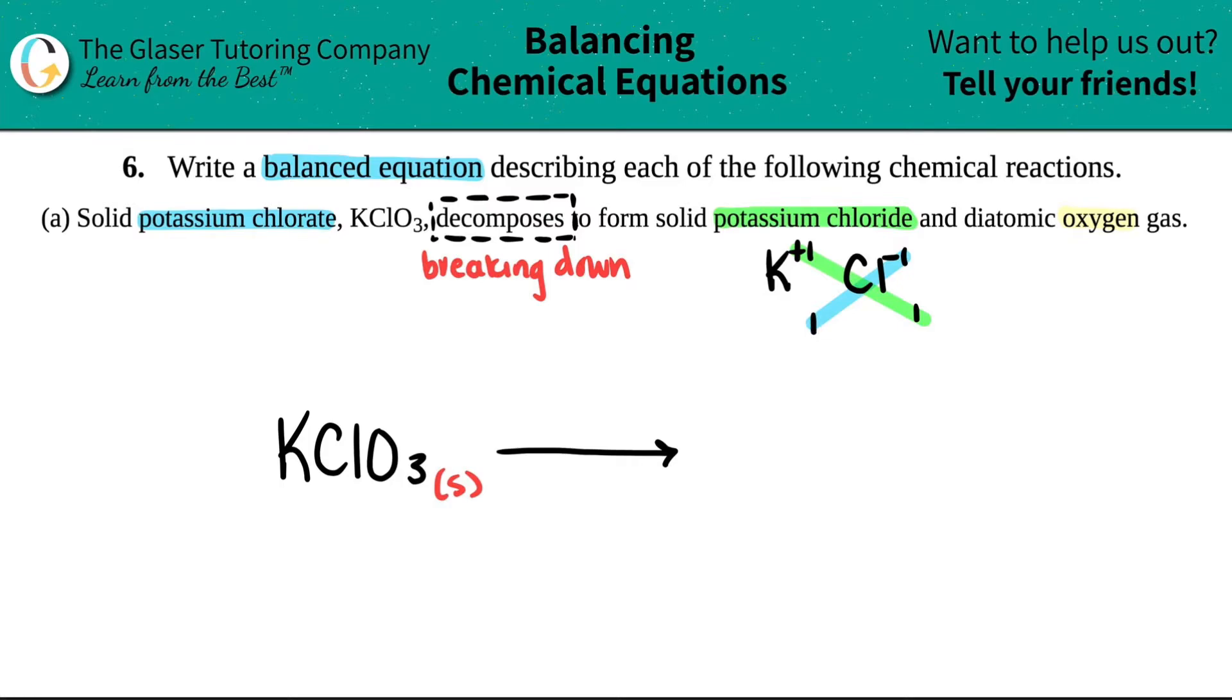This one crisscrosses down telling you that I have one chlorine, and the same thing goes for this one - one potassium. But it's one-to-one, so I can't break that down any further. My compound would just be KCl, potassium chloride. They told me it's a solid, so I'm just going to say S.